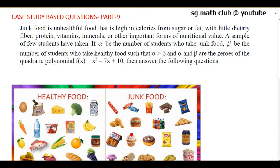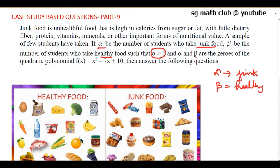Let alpha be the number of students who have taken junk food, and beta be the number of students who have taken healthy food. They have given that alpha is greater than beta, and alpha and beta are zeros of the quadratic polynomial x² - 7x + 10. Answer the following questions.